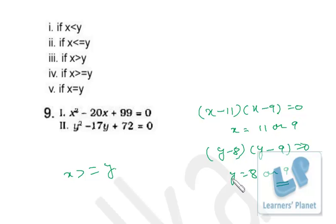So again, x is greater than or equal to y, because if x is 11, y is maybe 8, maybe 9, but x is greater. And if x is 9, in that case y is 9, that can be taken. So x is definitely greater and sometimes equal to y, so x is greater than or equal to y.